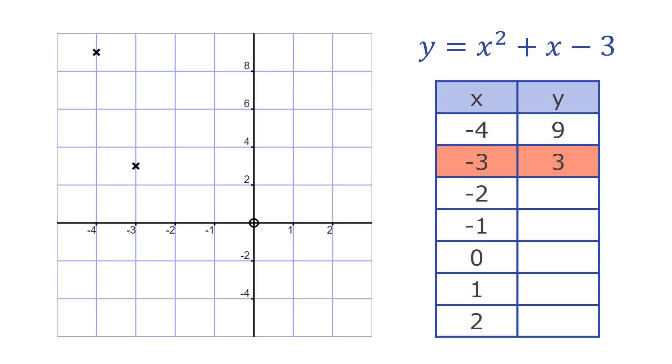We can do the same thing for x equals minus 3, which gives a value of y equals 3. So we can plot the point minus 3, 3 on the graph paper.